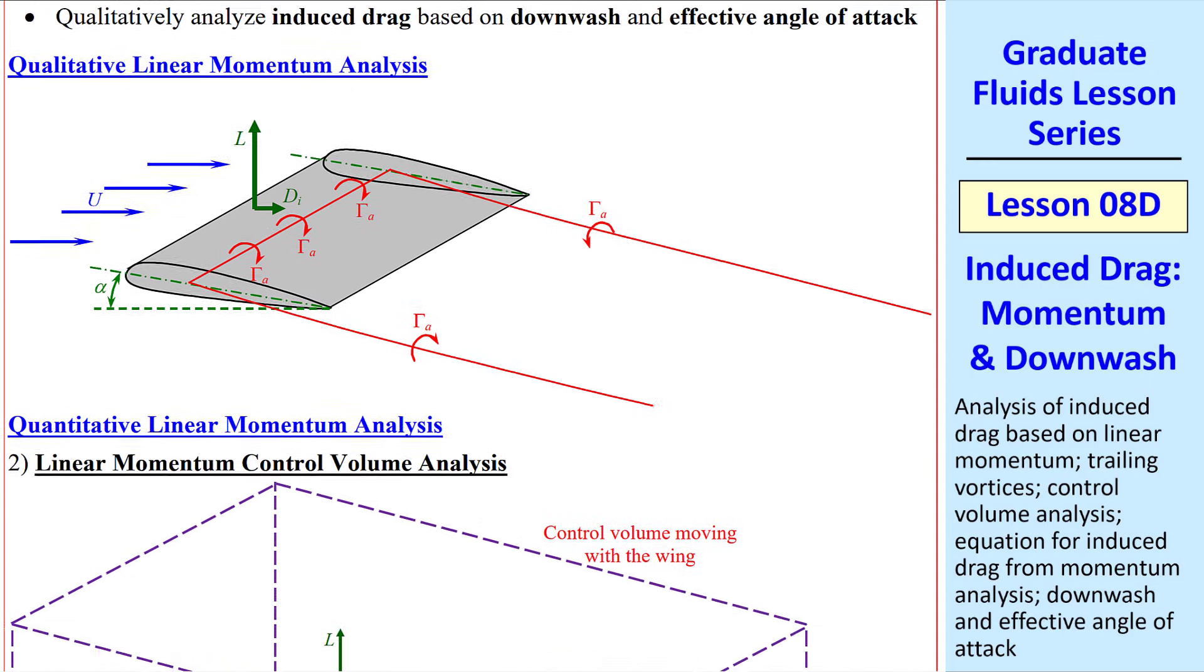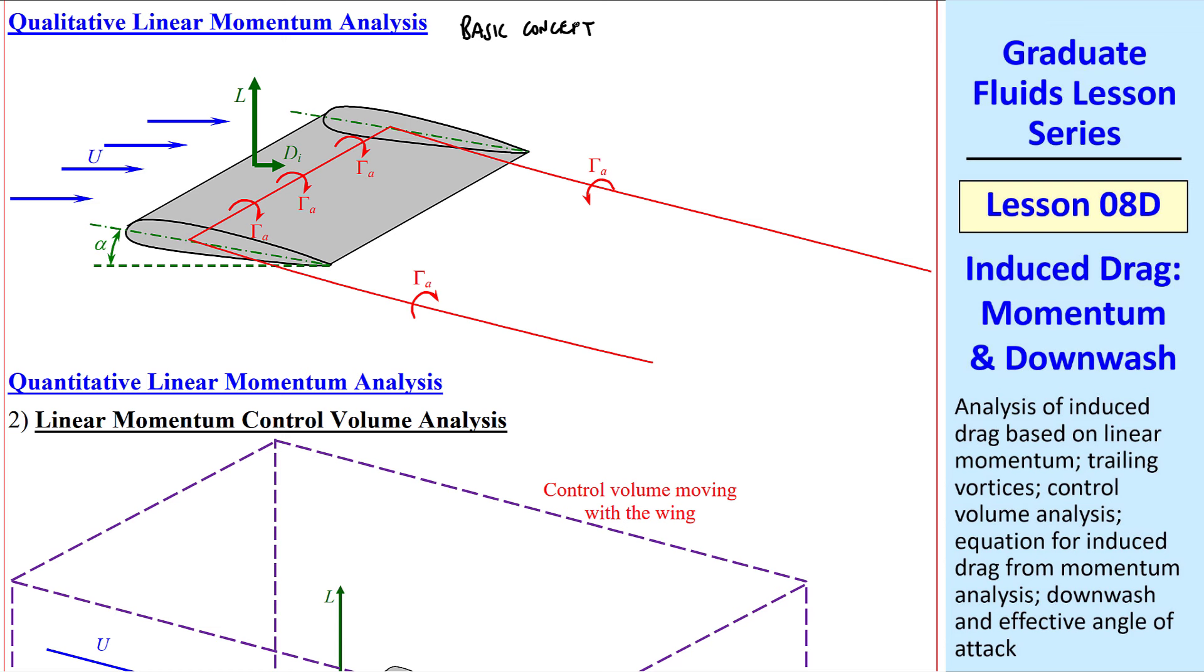Let's look at this momentum analysis qualitatively first. The basic concept is that pressure downstream is less than pressure upstream due to the trailing vortices. In other words, as the air is spinning around these vortices, we generate low pressure zones in the air surrounding these vortices. The overall pressure here downstream of the wing is thus lower than pressure upstream of the wing, hence a drag.